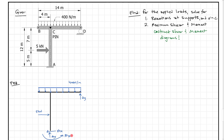After drawing the FBD, we look for equations we can solve. We have AY and DY — two unknowns in the Y direction, so we can't solve that yet. But AX is the only force in the X direction, so we can solve for it. Summing forces in X: minus AX plus five kilonewtons equals zero, giving AX equals five kilonewtons.